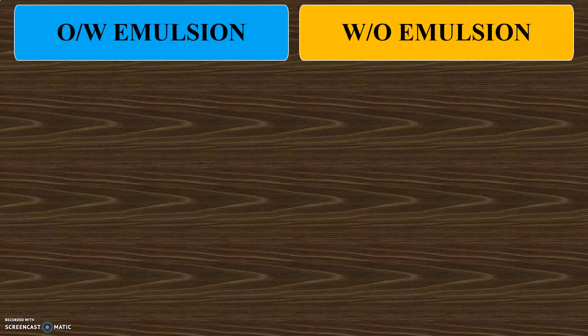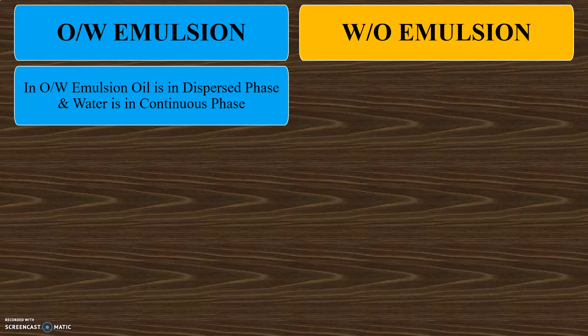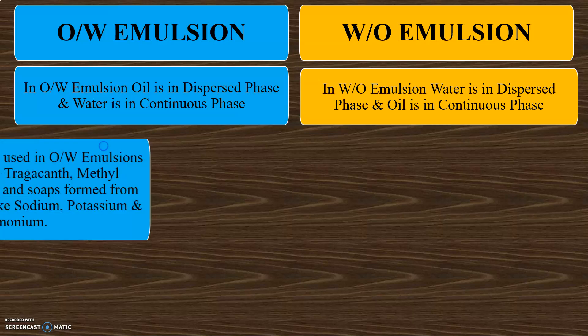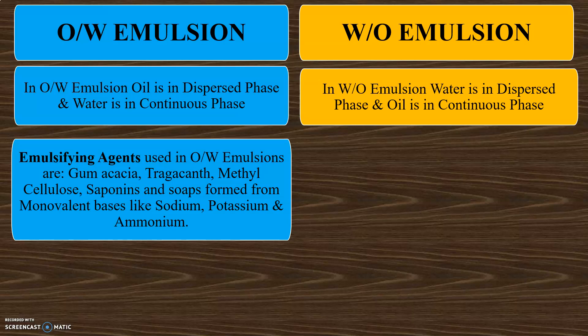Now let us see the difference between O/W and W/O types of emulsions. In O/W emulsion, the oil is in the dispersed phase and water is in the continuous phase. The emulsifying agents used in O/W emulsions are gum acacia, tragacanth, methylcellulose, saponins, and soaps formed from monovalent bases like sodium, potassium, and ammonium.